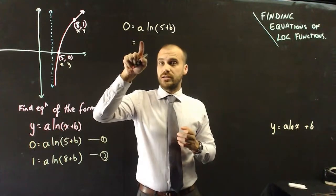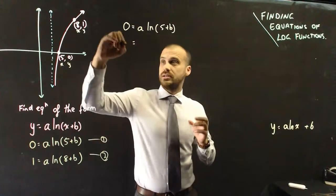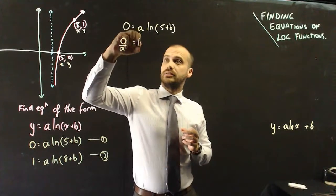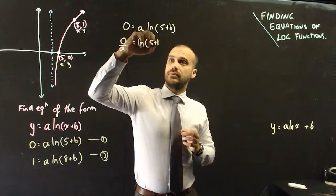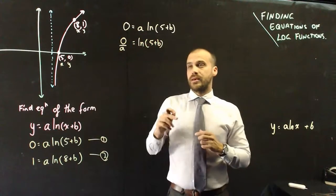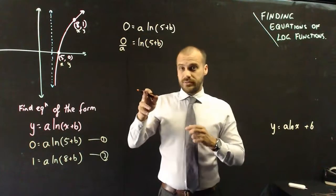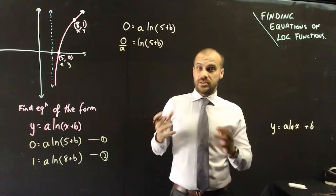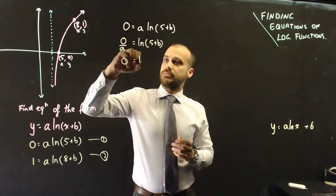Like that. Now 0 divided by a, 0 divided by anything is 0. And just like that, the a has disappeared.